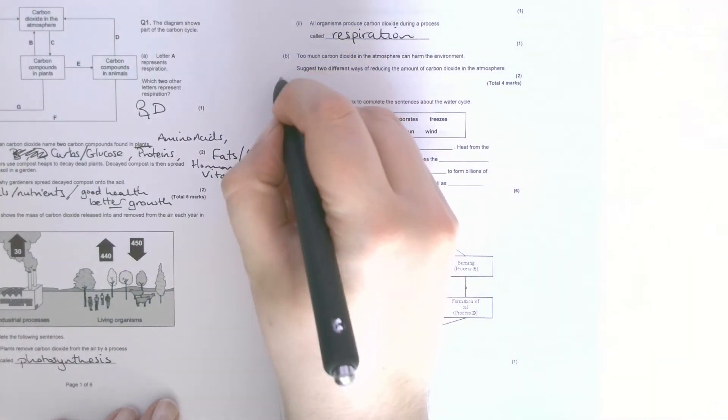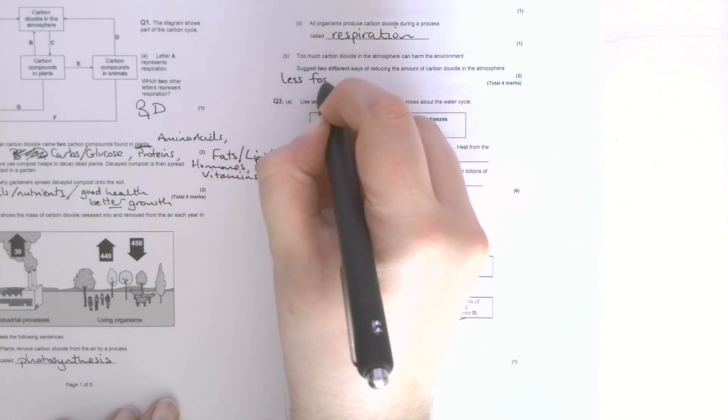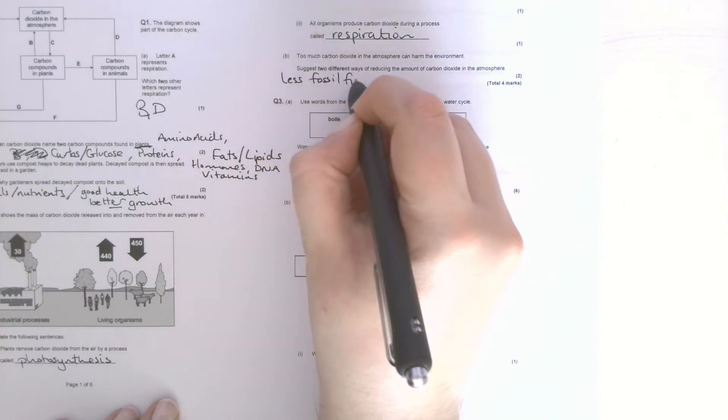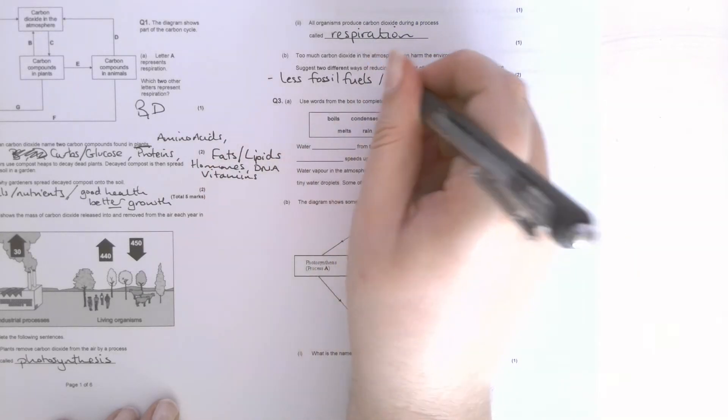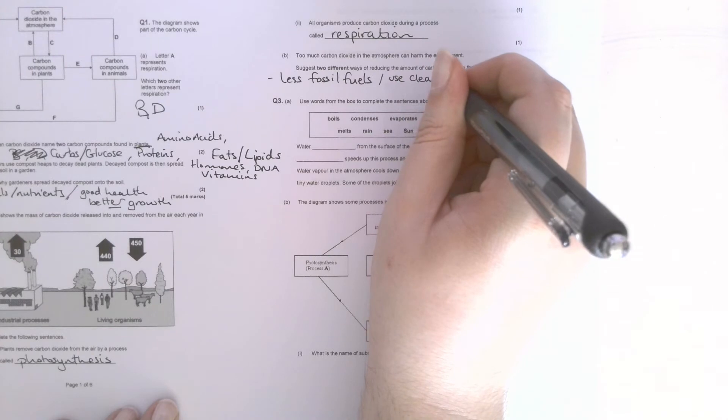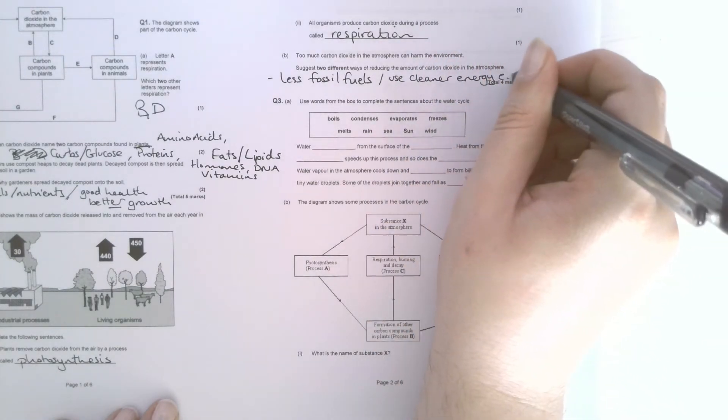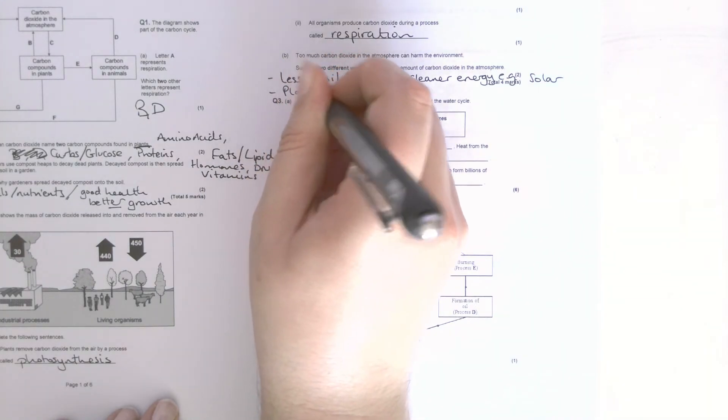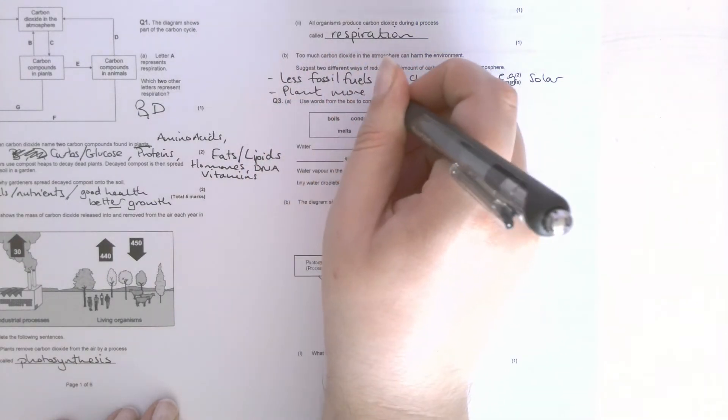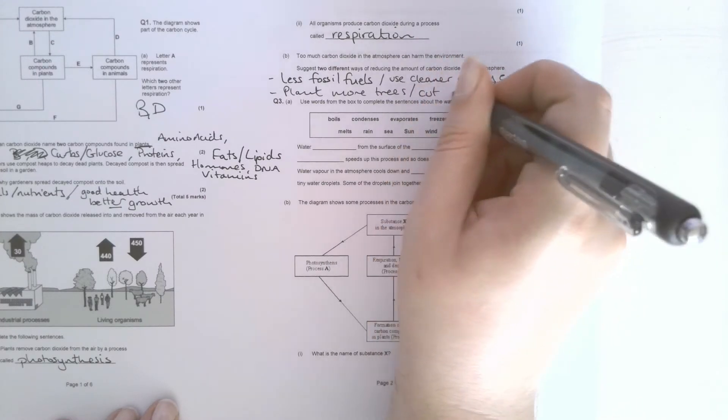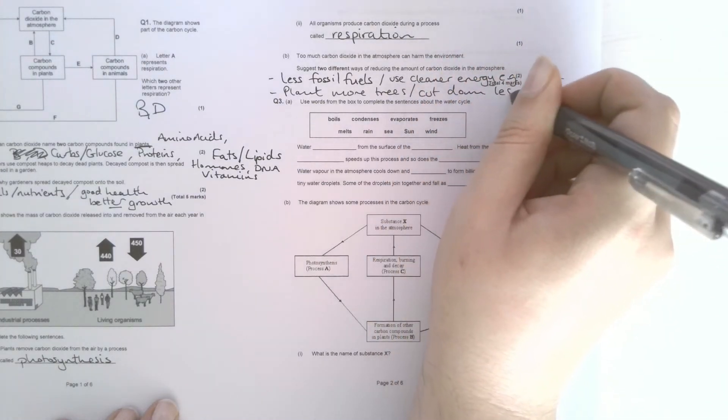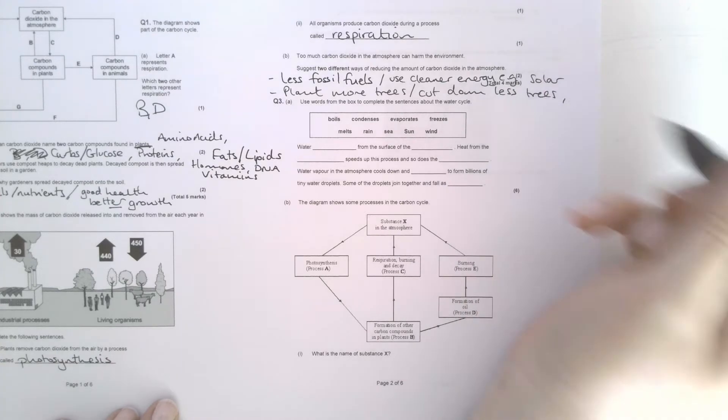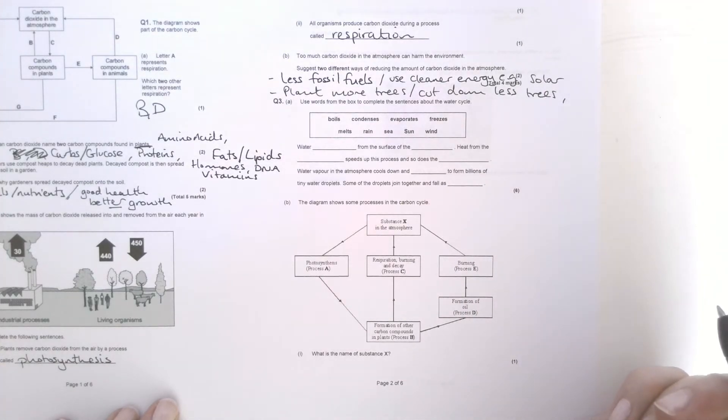So less fossil fuels, or same mark, use cleaner energy, e.g. solar. Plant more trees, or cut down less trees.